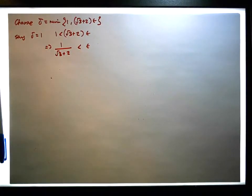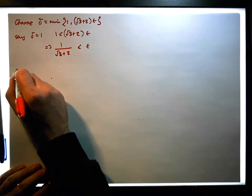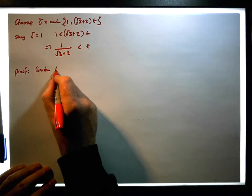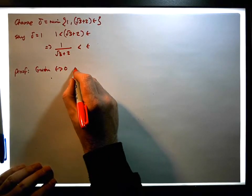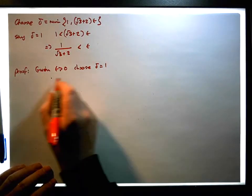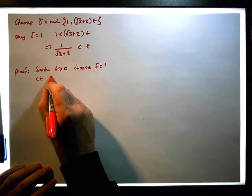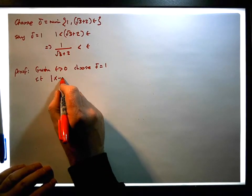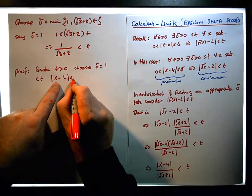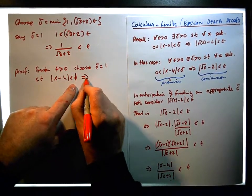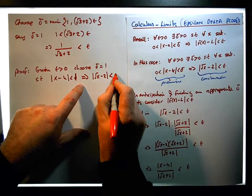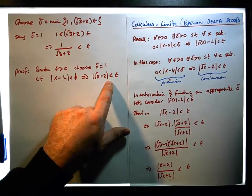So now let's use our delta in the proof. Given an epsilon greater than zero, choose delta equal to one, such that for each and every x where the absolute value of x minus four is less than one, this must imply that the absolute value of the square root of x minus two is less than epsilon. So now we use this fact to show this conclusion.